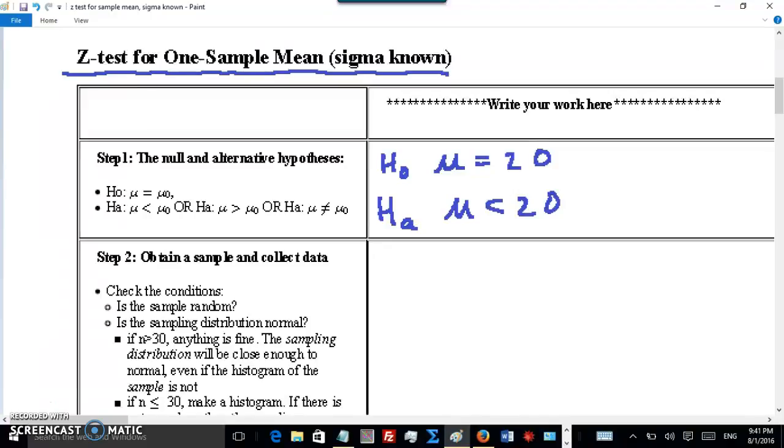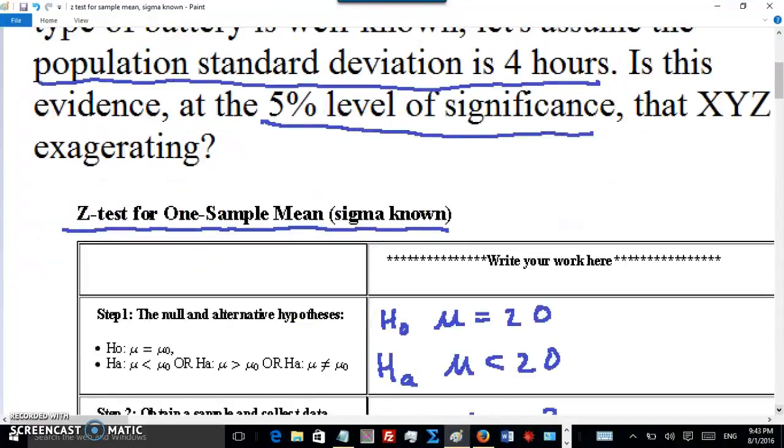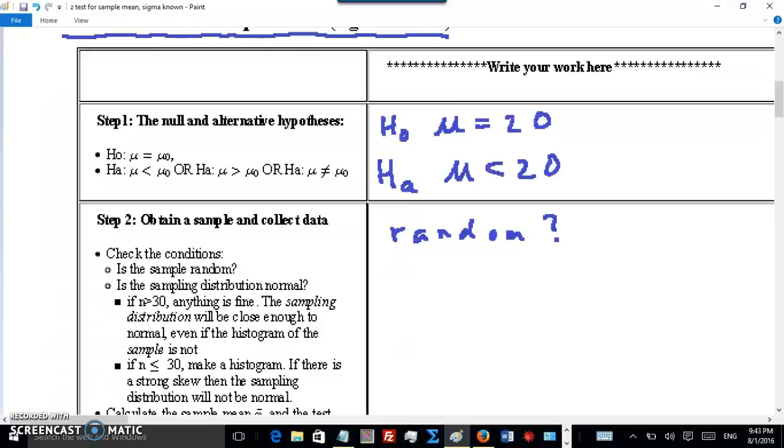Step 2, obtain and collect the data. Check the condition. Is the sample random? It says so right here, random sample. So we'll take their word for it that it really is a random sample. Now, the sample size is only nine. It's very possible that if the distribution is not unimodal and symmetric, then the distribution itself might not be normal. We don't have a histogram. We don't know what the raw data is actually like. N is less than 30, so we don't know for sure that the sampling distribution is normal. But let's just pretend it is so we can finish with the question.